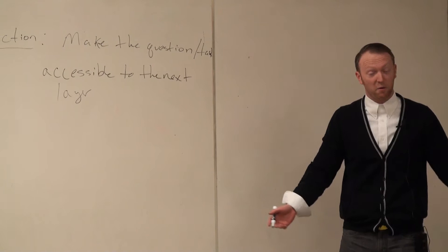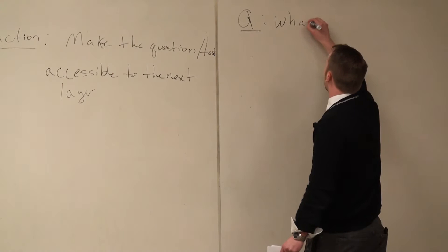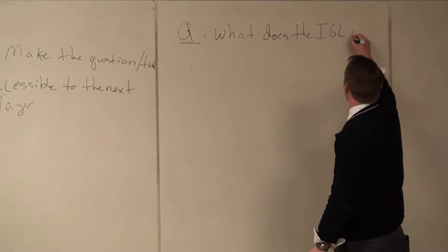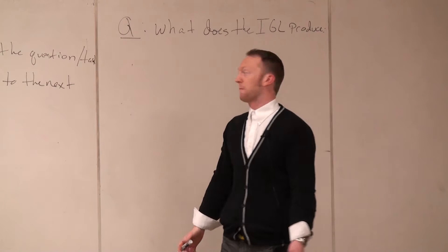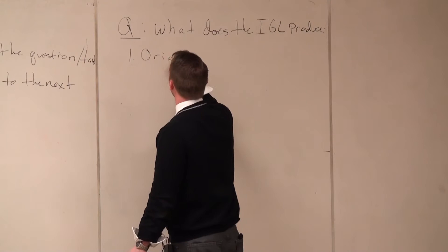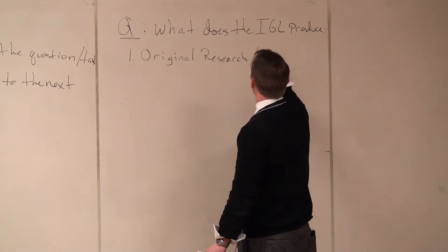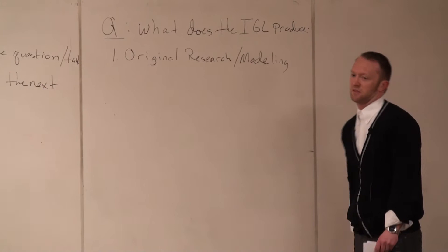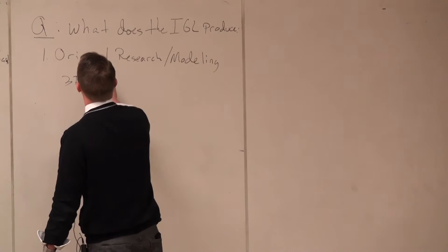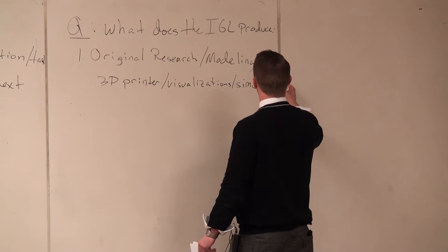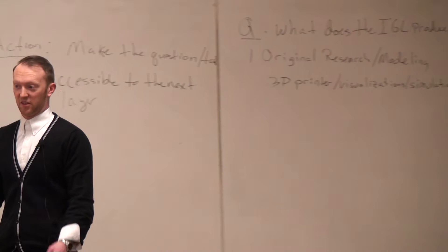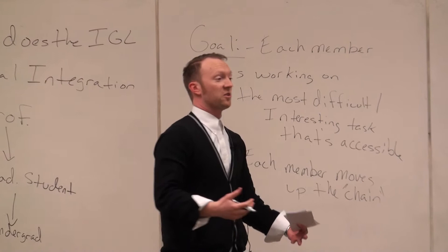What does the IGL produce? If we're spending all these man hours and grant money, it's nice to have some outcomes. A big one from the lab is original research slash modeling — things using our 3D printer, computer visualizations, or simulations. If the math has been done before, the picture of it has never been done before; the actual model you can put your hands on has never been made before. We're either creating new knowledge or making something that's not been seen before.